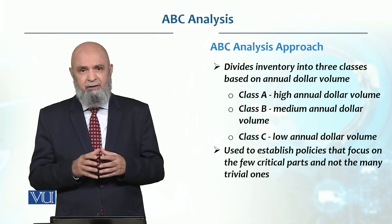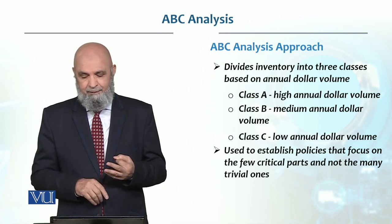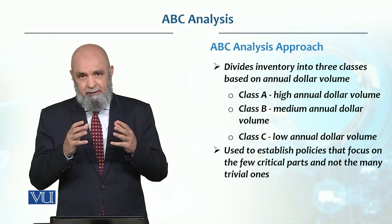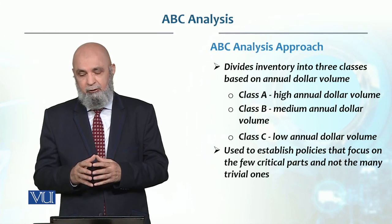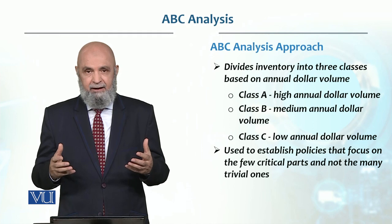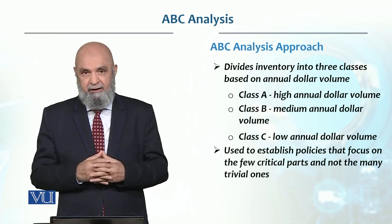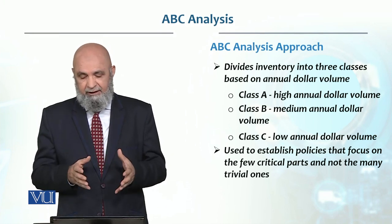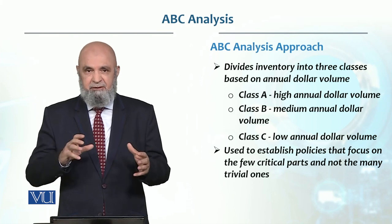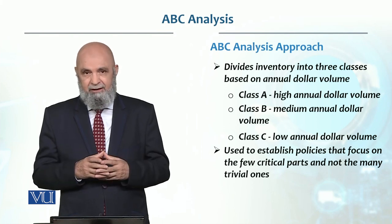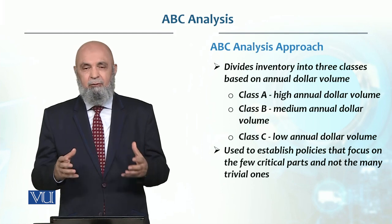What we do is divide the inventory into three classes: A class, B class, and C class. In A class, the product has a very high annual dollar value — usually around 70% of total value. Class B is medium annual dollar value, roughly 25%. And C is very low value.